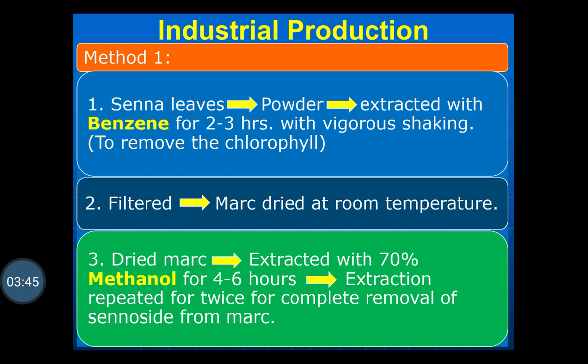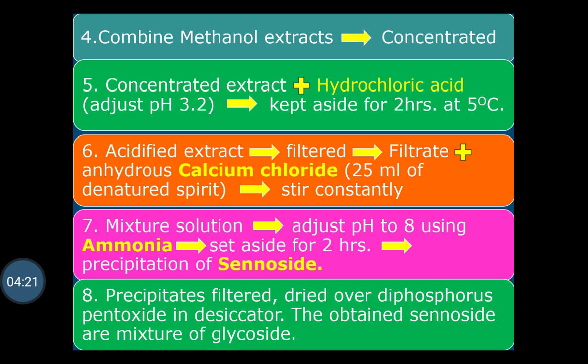The dried marc is then extracted with 70% methanol for 4 to 6 hours. The extraction is repeated twice for complete removal of sennosides from the marc. Both methanol extracts are combined and concentrated.